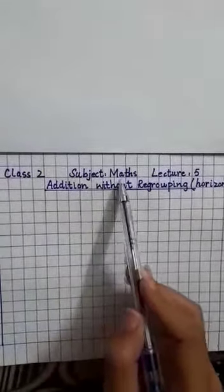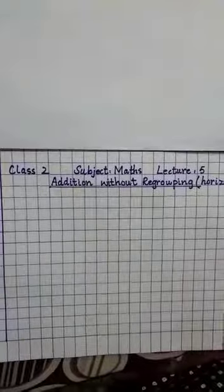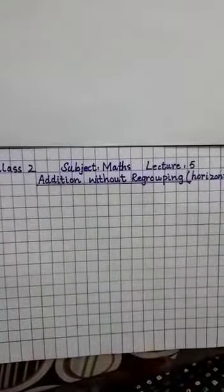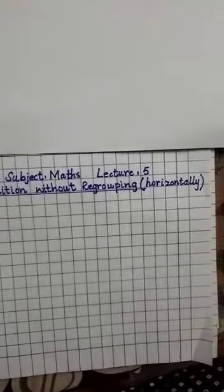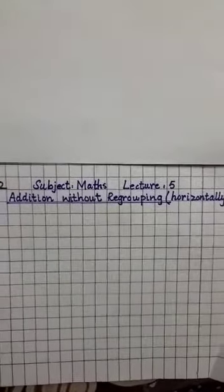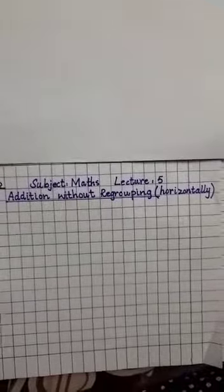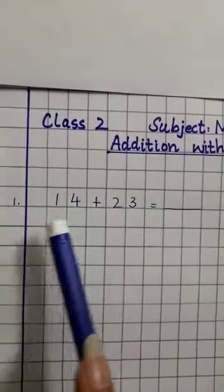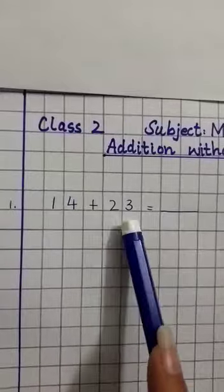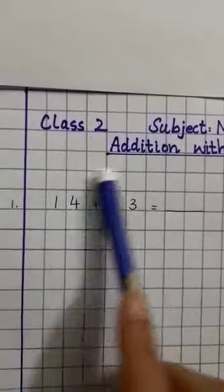Class 2, Subject: Maths, Lecture Number 5. Today's topic is addition without regrouping horizontally. This is sum number 1: 14 plus 23. This is in horizontal form.